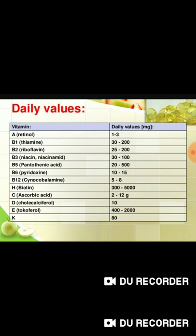Regarding daily values: vitamin A retinol is 1.3 milligrams; B1 thiamine is 336–200 milligrams; B2 riboflavin is 25–200 milligrams; B3 niacin is 37 milligrams; B5 pantothenic acid is 10–25 milligrams; B6 pyridoxine is 10–15 milligrams.